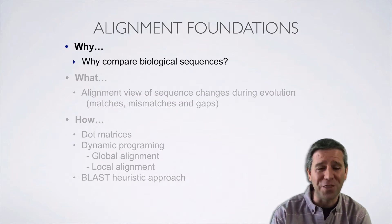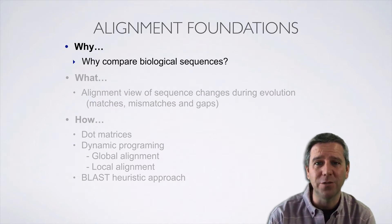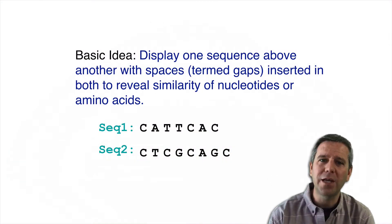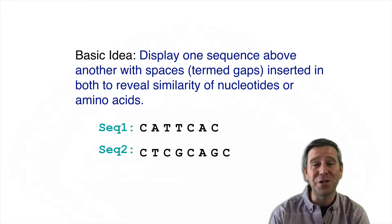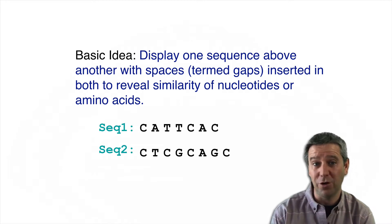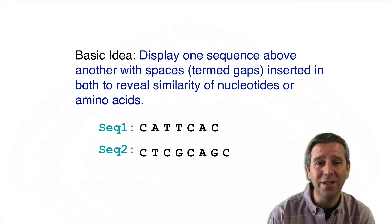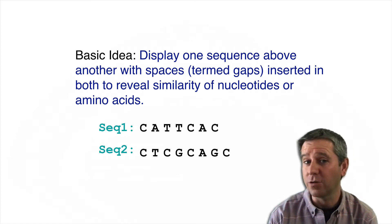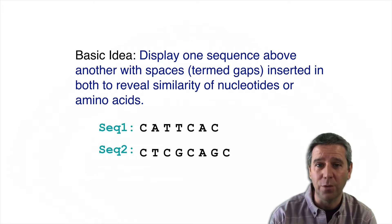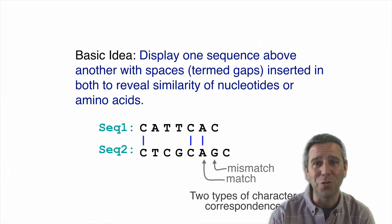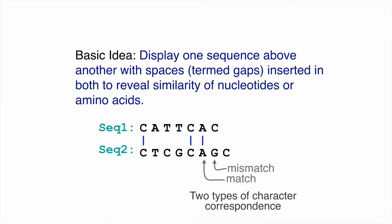So let's get started with the why of comparing biological sequences. The basic idea is a pretty simple one: we want to display a pair of sequences, one above the other, with spaces — termed gaps — inserted into both to reveal the similarity of the actual characters, whether those characters are nucleotides or amino acids in the case of proteins. If we consider two short nucleotide sequence examples, Seq1 and Seq2, we can consider two types of character correspondence: a match, where the two characters are the same, and a mismatch, where they differ.